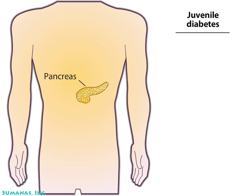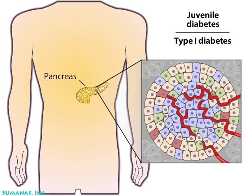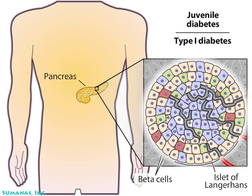In this disease, also known as type 1 diabetes, the immune system destroys insulin-producing cells of the pancreas. Insulin-producing cells, called beta cells, are normally found within cell clusters called islets of Langerhans.